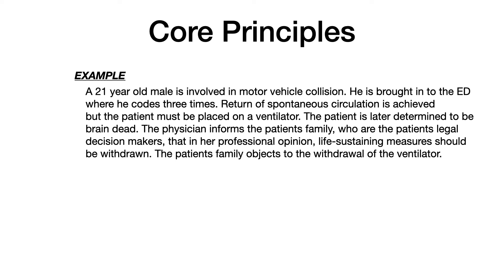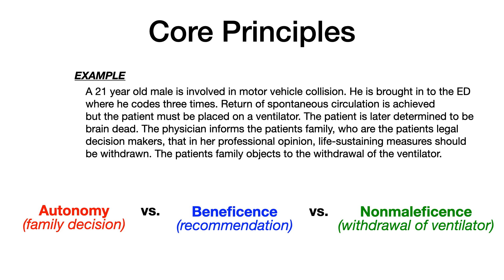So what's the issue in this example? There are three things at odds with one another. First, autonomy — the patient's family being his legal decision maker. Their decision is at odds with beneficence, which is the physician's recommendation, or what she believes is in the best interest of the patient. But also, there is an element of non-maleficence at odds as well, because although the physician recommends that life-sustaining measures be withdrawn, she must consider that in withdrawing those measures and allowing the patient to pass away, there is an element of doing no harm that she must weigh.